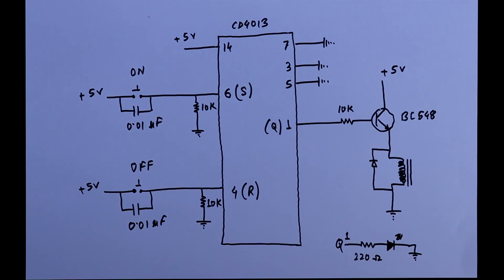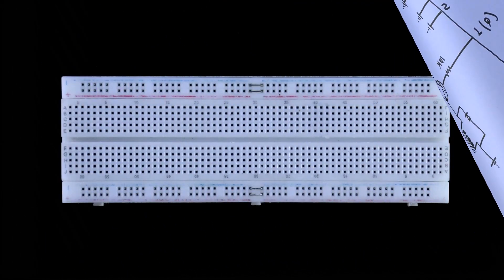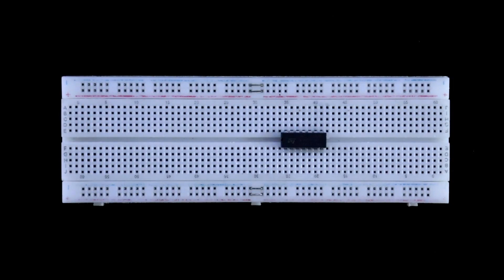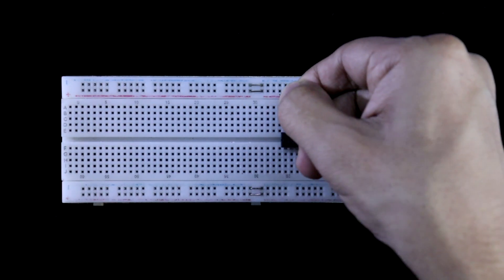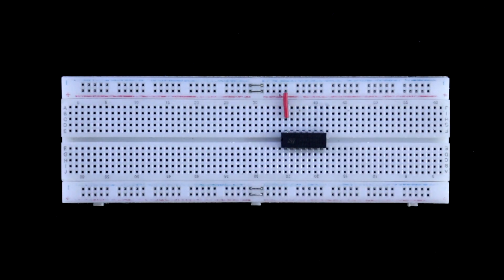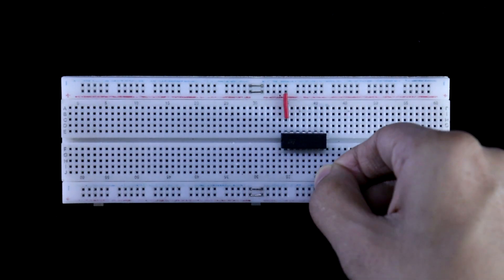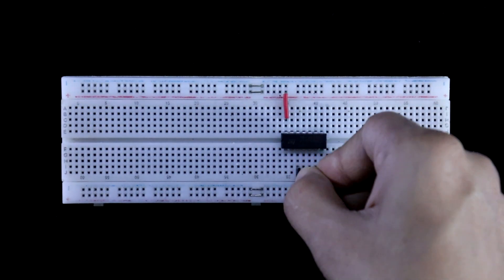Now we will see this in practical. IC 4013. Pin 14 is connected to plus VCC or plus 5V. Pin 7 is connected to ground, also pins 3 and 5.